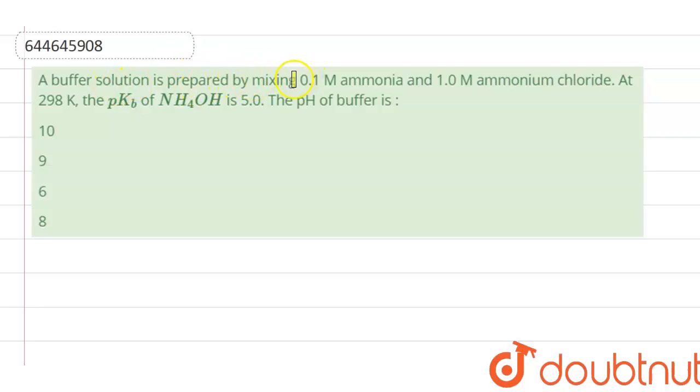A buffer solution is prepared by mixing 0.1 molar ammonia and 1.0 molar ammonium chloride at 298 Kelvin. The pKb of the sodium hydroxide is 5, and pH of the buffer is... Let us calculate the pH of the buffer. Here in the question, we have to calculate the pOH of basic buffer.